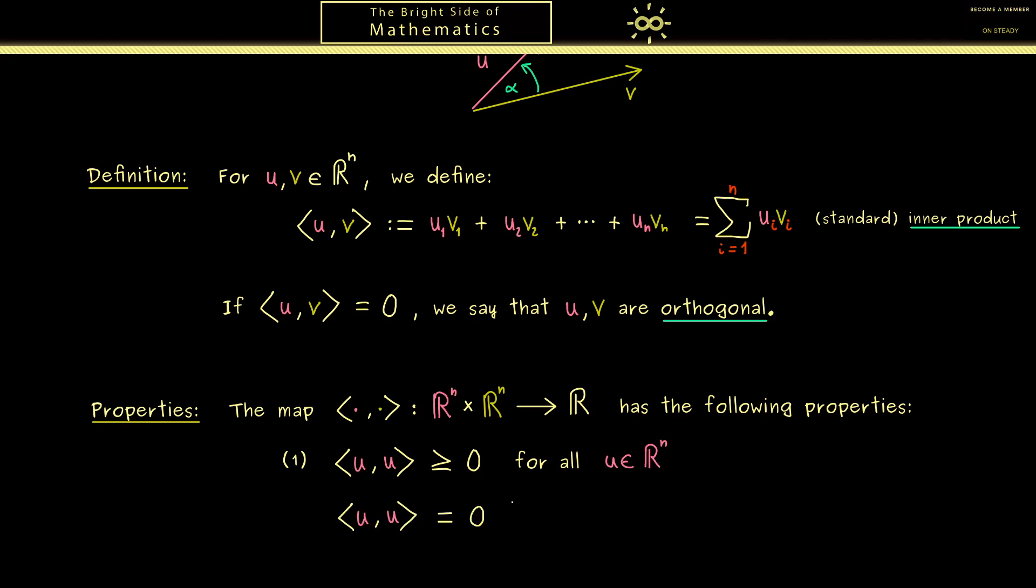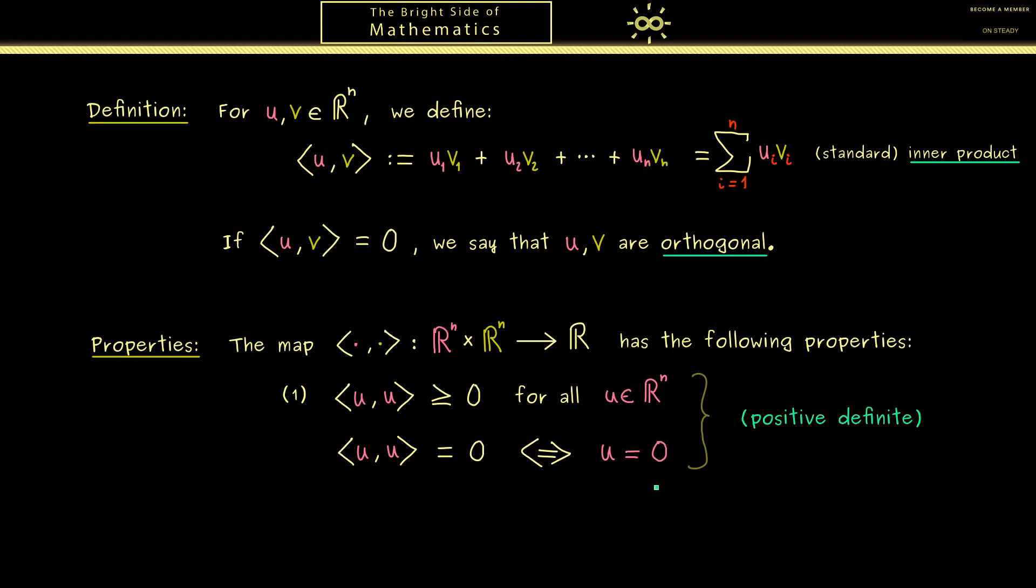Moreover we also know what happens when we have the equality sign here. If this inner product is 0 this happens if and only if the vector u is the 0 vector. This property is what we also immediately see when we look at the squares given in the sum. Moreover now both things here together is a property we call positive definite. It tells us that we are always positive except for the 0 vector.